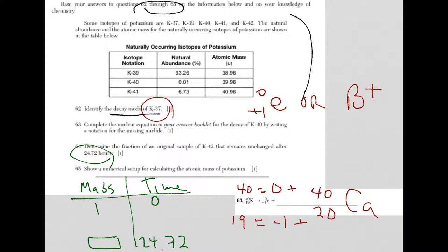If 12.36 hours goes by, I have half of what I originally had. If another 12.36 hours goes by, guess what? I have half of a half, which is a quarter. And there's my answer. One quarter. You could have put 25%. You could have put 0.25. But the fraction really is one quarter here.